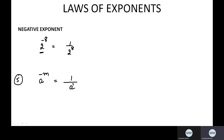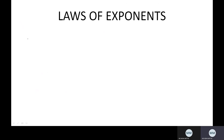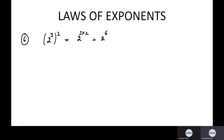Now rule number six: suppose you have 2 raised to the power 3, and the whole bracket is raised to the power 2. The bracket means multiply, and both are powers — 3 and 2. How can it be combined? Multiply these powers: 3 into 2 equals 6. So this is the next rule: if you have a raised to the power m, and again it has some power n, simply multiply the powers together — (a^m)^n = a^(m×n).